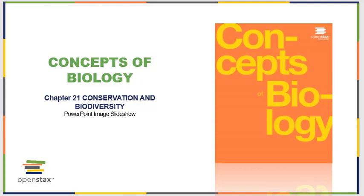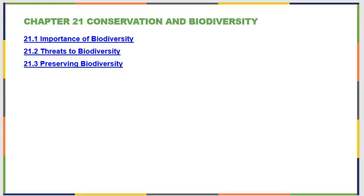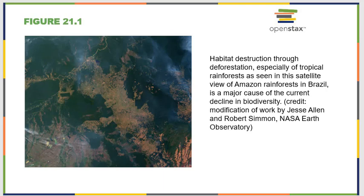The final chapter of Concepts of Biology is Chapter 21, Conservation and Biodiversity. It's a relatively short chapter that touches on the importance of biodiversity, the threats to it, and how we can go about preserving it. Biodiversity is an incredibly important thing to protect. Habitat destruction through deforestation, especially of our rainforests — as seen in this image of Brazil — is one of the current major causes of biodiversity loss, but there are actually a lot of other things happening on our planet that are threatening it as well.